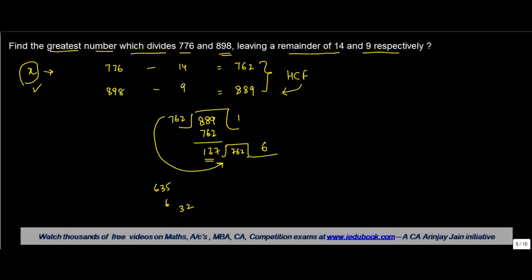So 6 is apt over here. 6 times 7 gives you 42, 4 carry. 6 times 2 gives you 12 plus 4 gives you 16, 1 carry. 6 times 1 is 6 plus 1 gives you 7. So my remainder comes as 0 when the divisor is 127.